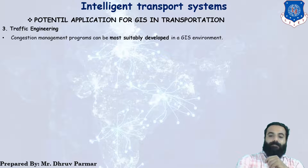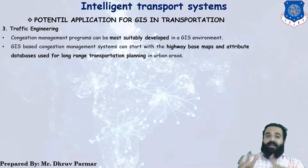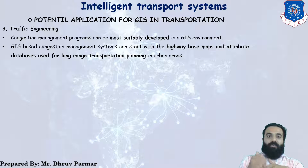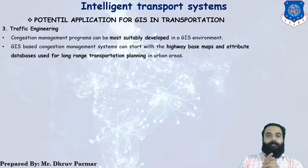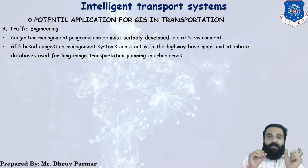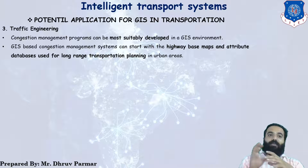The third application is traffic engineering. In traffic engineering, problems like traffic gridlock, traffic congestion can be solved using a suitably developed GIS environment. A congestion management program can be most suitably developed in a GIS environment. GIS-based congestion management starts with a base map of the highway and an attribute database used for long-range transportation planning in urban areas. This is the main key role of GIS in traffic engineering.